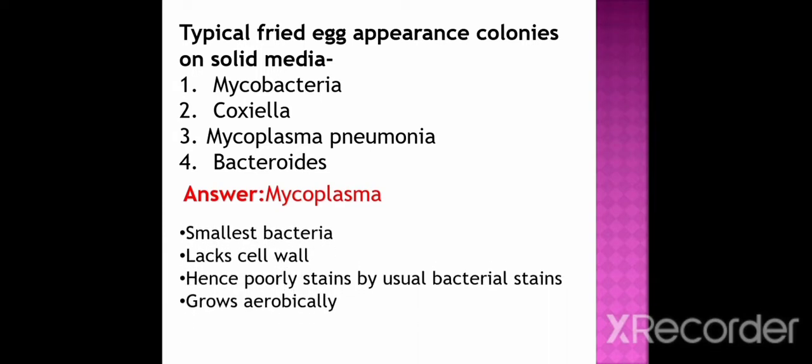Mycoplasma is the smallest bacteria. They lack a cell wall. That's why they are poorly stained by the usual bacterial stain. They grow aerobically.